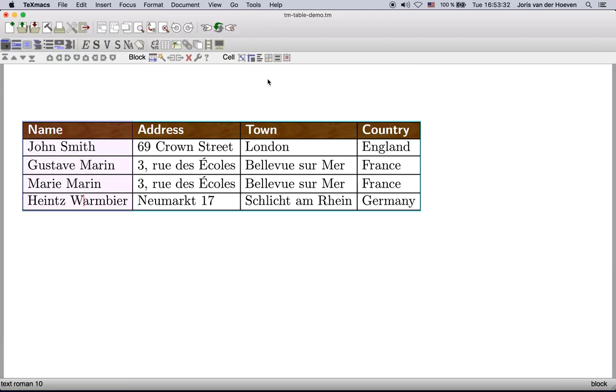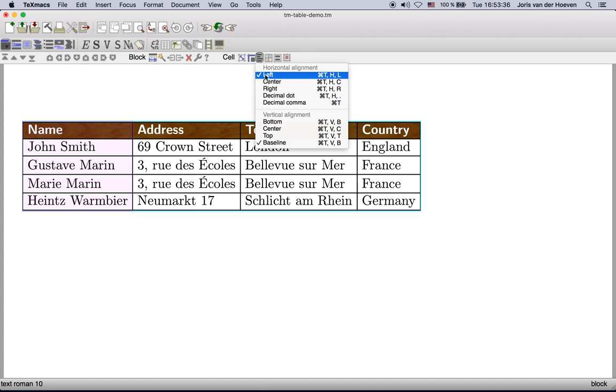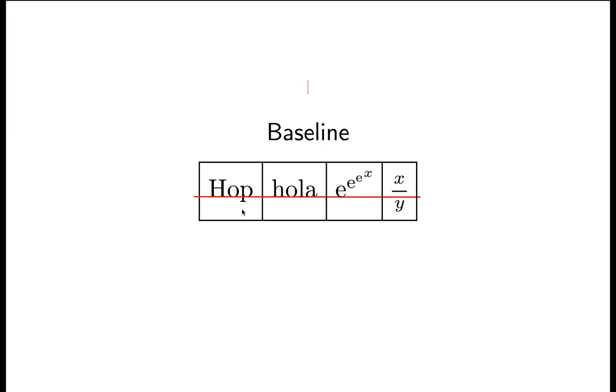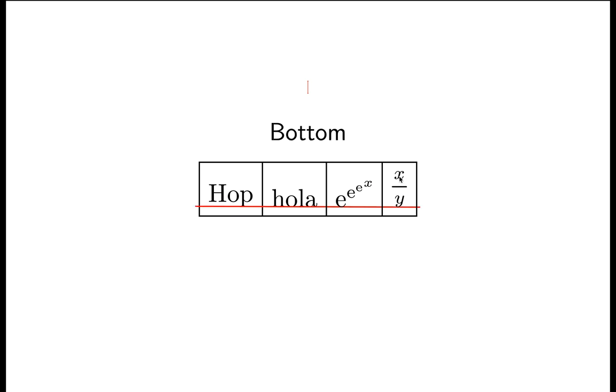The following submenu can be used to change the horizontal and vertical alignment of cells. This can also be done by combining the command or meta key with the cursor keys. The default vertical alignment is at the so-called baseline of the text. Some characters such as the p here may descend below the baseline. And the same holds for certain mathematical formulas such as this fraction here. For this reason alignment at the baseline does not coincide with alignment at the bottom. It is also possible to vertically align at the center or at the top.